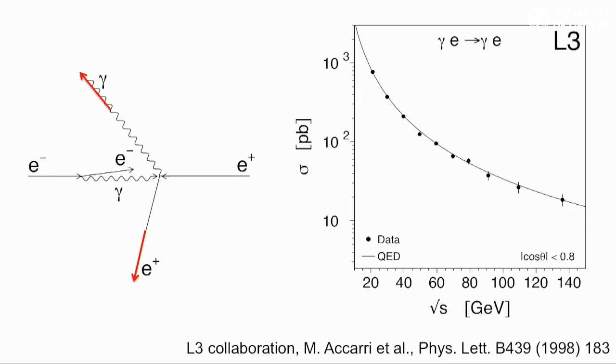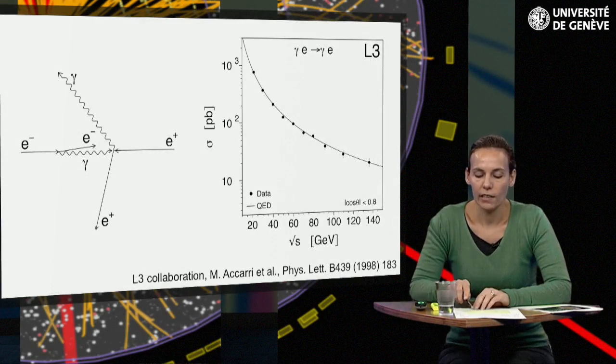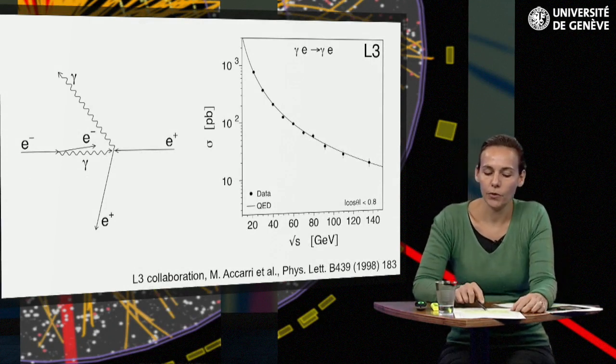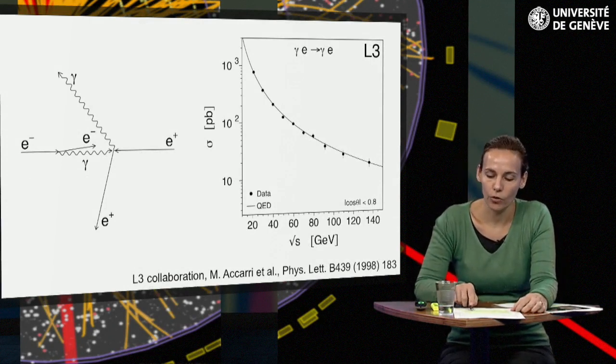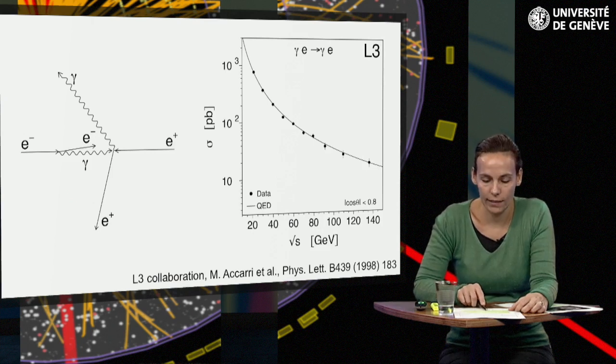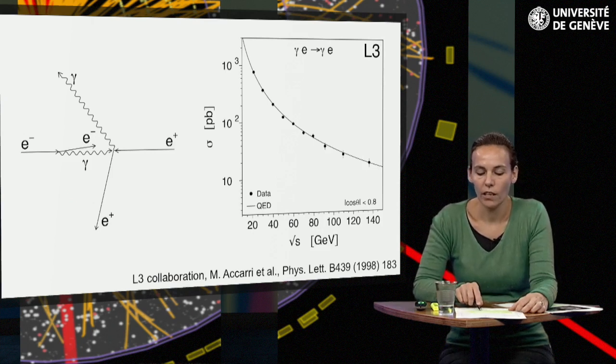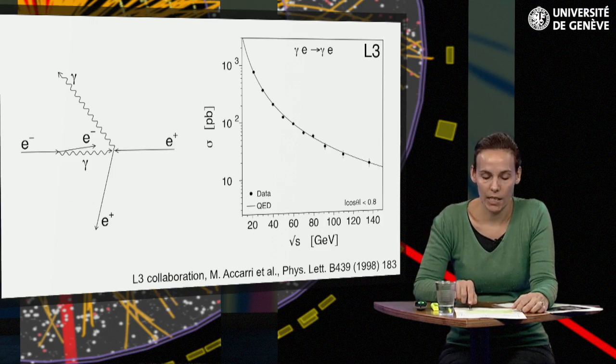The outgoing electron and photon are observed in the detector. As the initial photon connects two vertices, it is a virtual photon with k-square different from zero. Our treatment of the Compton effect applies to real photons with k-square equal to zero. To apply it to this case, we select events for which the mass of the initial photon is negligible compared to the characteristic energy, that is to say, k-square much smaller than s.